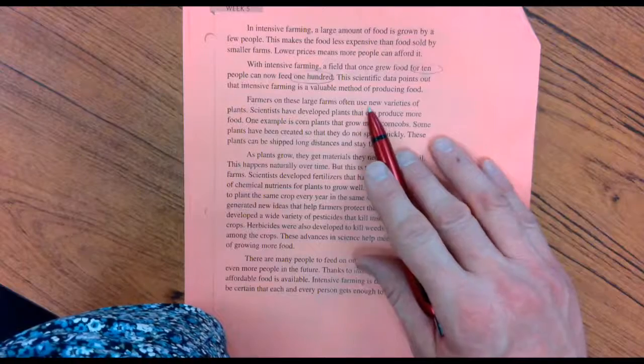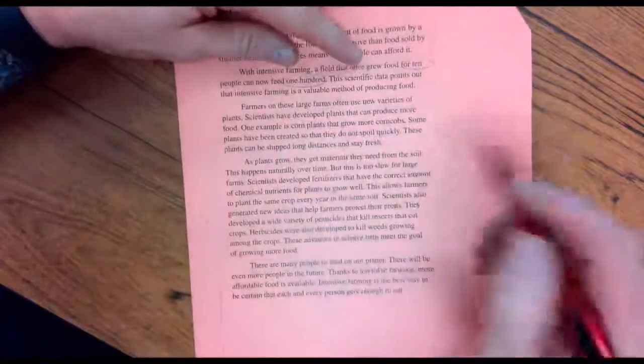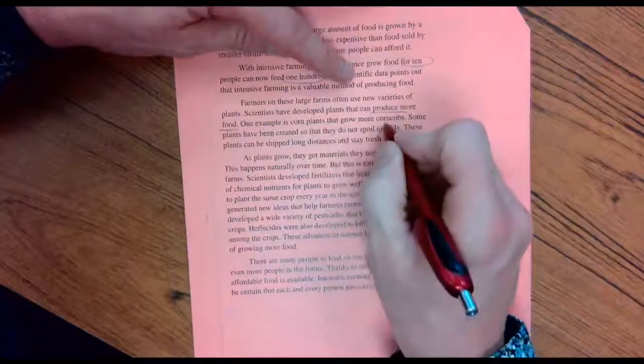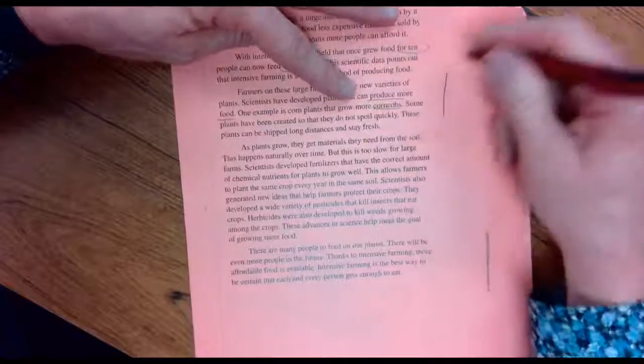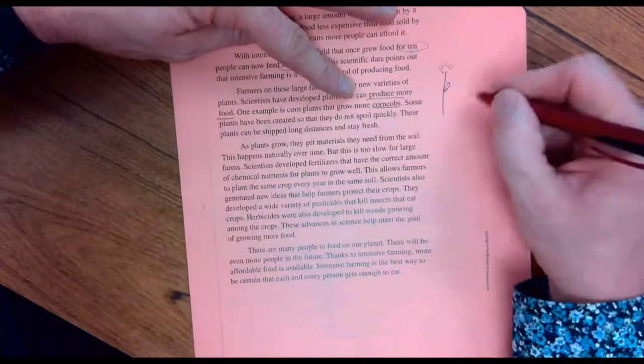This scientific data points out that intensive farming is a valuable method of producing food. Farmers on these large farms often use new variants of plants. Scientists have developed plants that can produce more food. One example is a corn plant that grows more corn cobs.